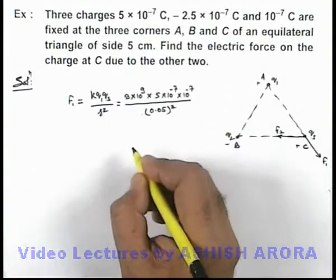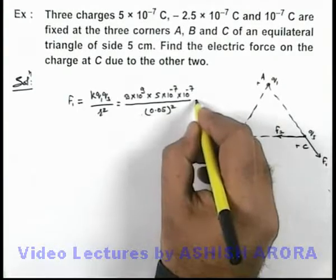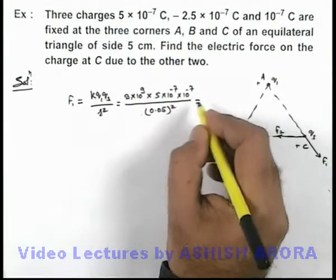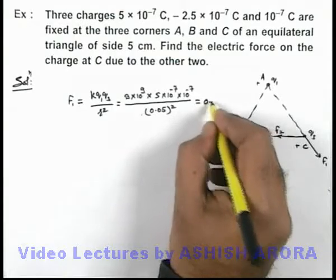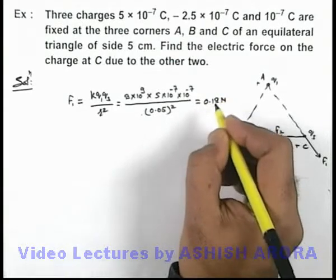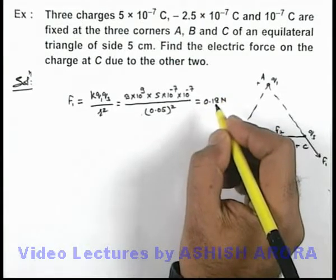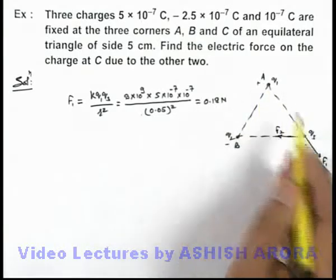On calculation this will result in a value—you can easily simplify it—it will be 0.18 newton. That will be the value of this force which A is exerting on C.